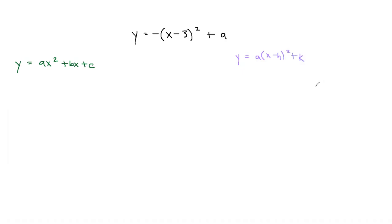There are a few things to know about vertex form. Firstly, the positivity or negativity of a tells you whether the parabola opens upward or downward. Secondly, the vertex of the parabola is always located at h comma k.